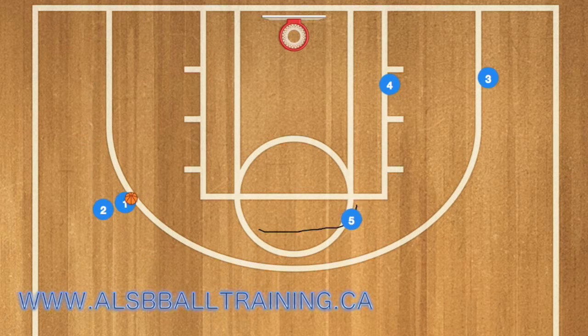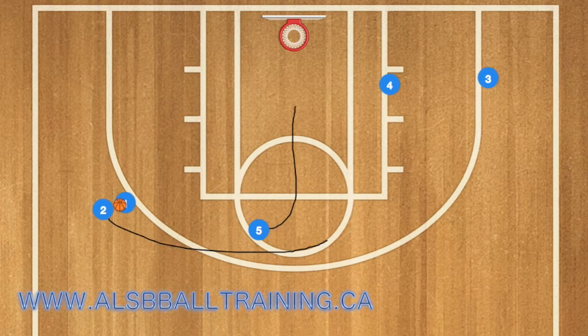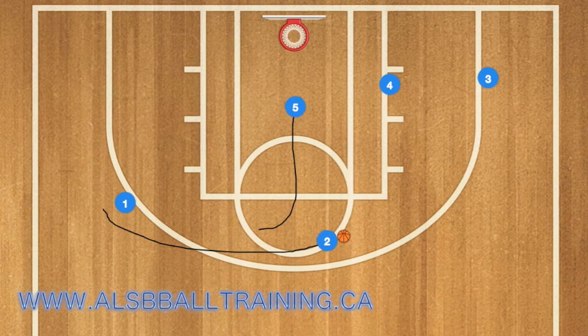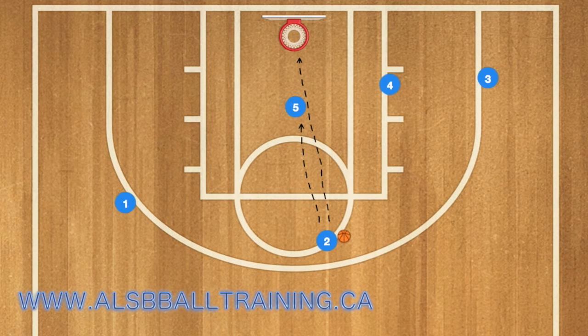Two will get the ball and five will set up for a screen. Two and five will do a screen and roll, and two can either shoot the ball after the screen or pass to player five, who is rolling towards the basket.